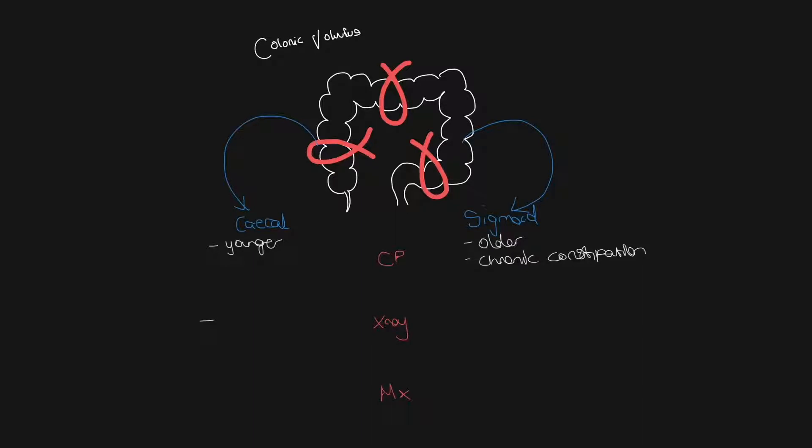And how do they look differently on x-ray? In cecal volvulus, you will see a dilated gas-filled viscous. This tends to arise in the pelvis and moves into the left upper quadrant. Another differentiating factor is that the dilated cecum tends to keep the haustra, whereas the dilated sigmoid will be a-haustral.